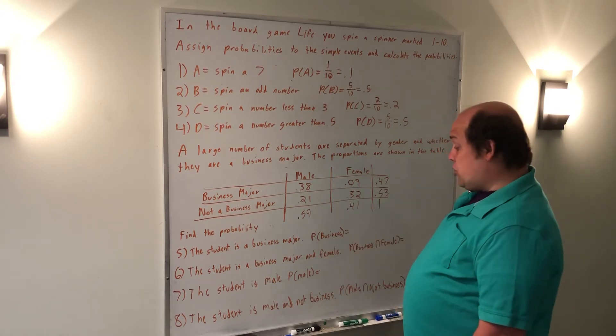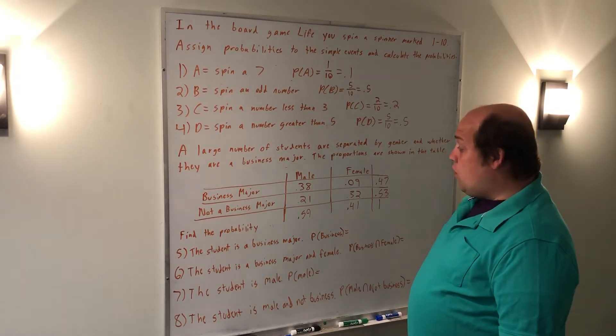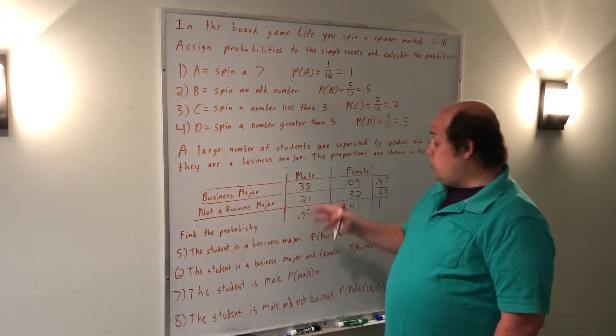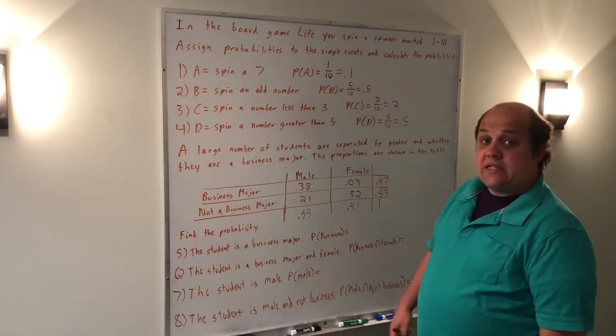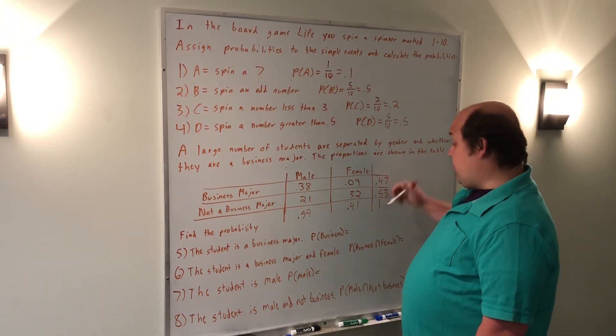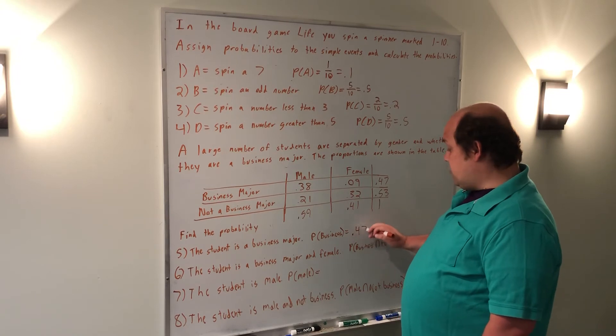So when they ask me the first question - the student is a business major - what that's really doing is isolating the first row. So it includes both the males and females that are business majors. For that reason, the answer I'm going to return is the total of that row, or 0.47 of the people who were surveyed are business majors.